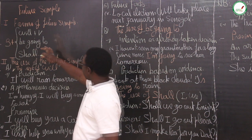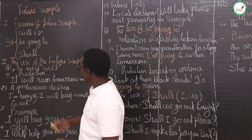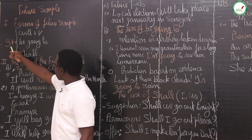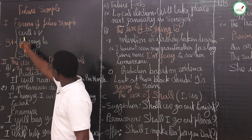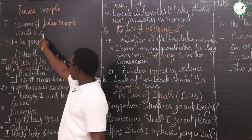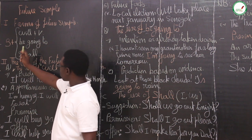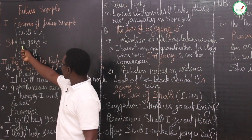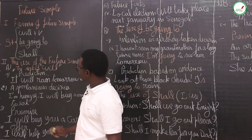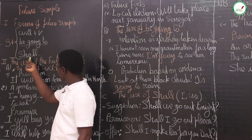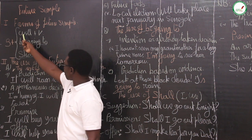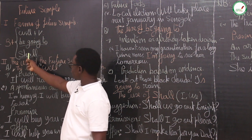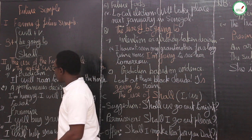The future simple — how do we form it? The future simple can be formed with 'will' plus verb. You can also use subject plus 'be going to', or subject plus 'shall'. So, you have the use of will, the use of be going to, and shall. That is the way we form the future simple.